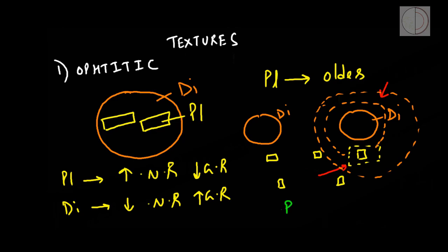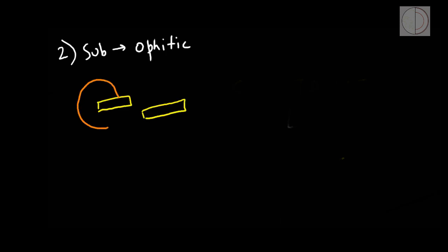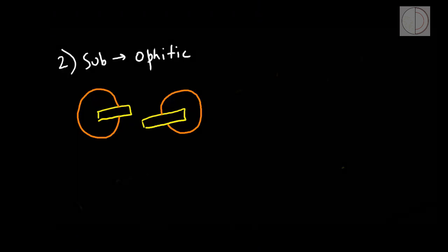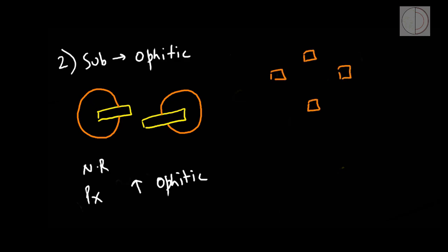We have already seen that simultaneous growth of diopside and plagioclase occurs at the eutectic of such systems. Hence, at the eutectic both crystallize simultaneously and can lead to the formation of ophitic texture. The second texture is sub-ophitic. In sub-ophitic texture, the plagioclase laths are not completely enclosed within the pyroxene grains. This is because the nucleation rate of pyroxene crystals is slightly higher than in the ophitic case, causing more nucleation sites and a decreased growth rate, resulting in incomplete enclosure of plagioclase in pyroxene crystals.